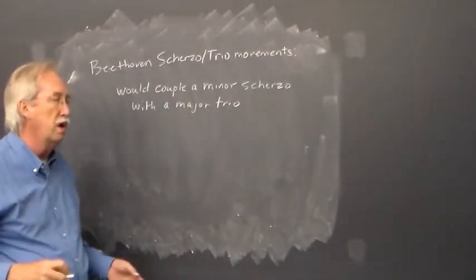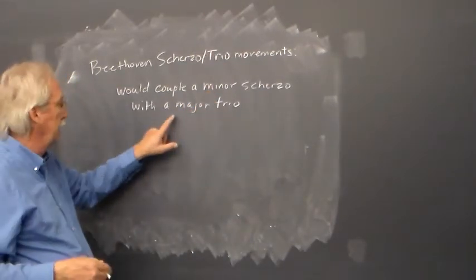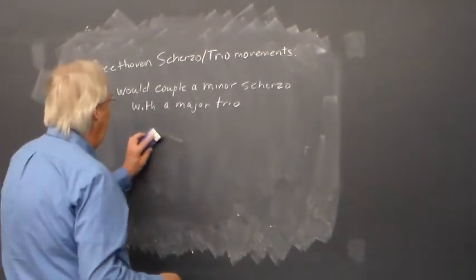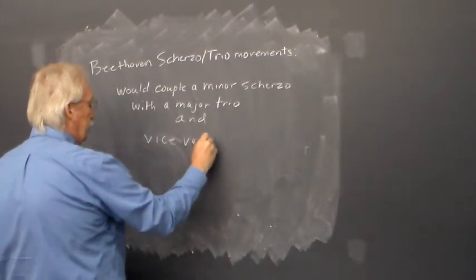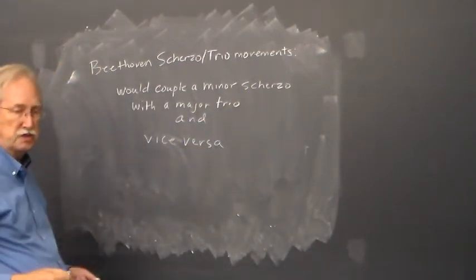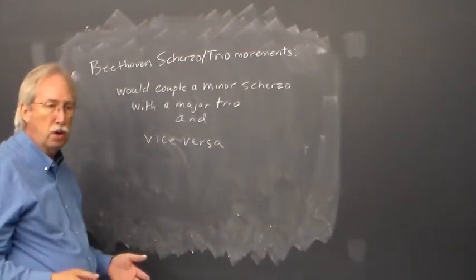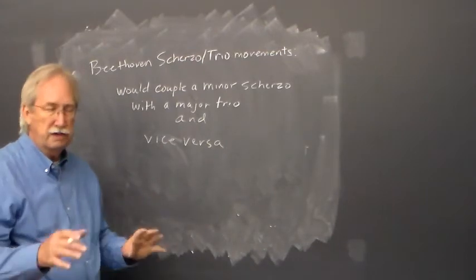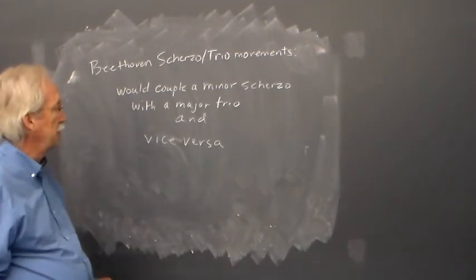You have this contrast of mode as well. Associated with that were these characters with minor being dramatic and major being something that is more comical. And vice versa, he would couple a major scherzo with a minor trio. As far as the key, he could use something like the relative minor, or the parallel minor and vice versa. You can find even further relationships there. But that idea of minor and major, he would play out those ideas in scherzo trio movements.